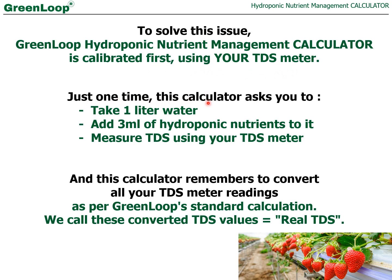To address this issue, the Green Loop hydroponic nutrient management calculator is first calibrated using your own TDS meter. Just one time, the calculator asks you to take one liter of water, add three ml of hydroponic nutrients to it, and measure its TDS. That TDS is then entered into the calculator, and the calculator remembers it to convert all your TDS meter readings in future. As per the Green Loop standard calculation, we call these converted TDS values 'real TDS.'